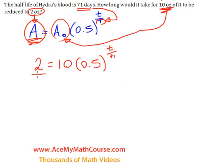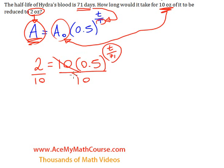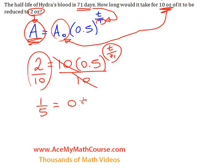I'll get started by dividing both sides of the equation by 10. A horrible mistake people normally make is to multiply the 10 by the half — you can't do that because of the exponent. But you can divide both sides by 10. So I get 2 over 10, which is one-fifth. One-fifth is equal to 0.5 to the power of t over 71.